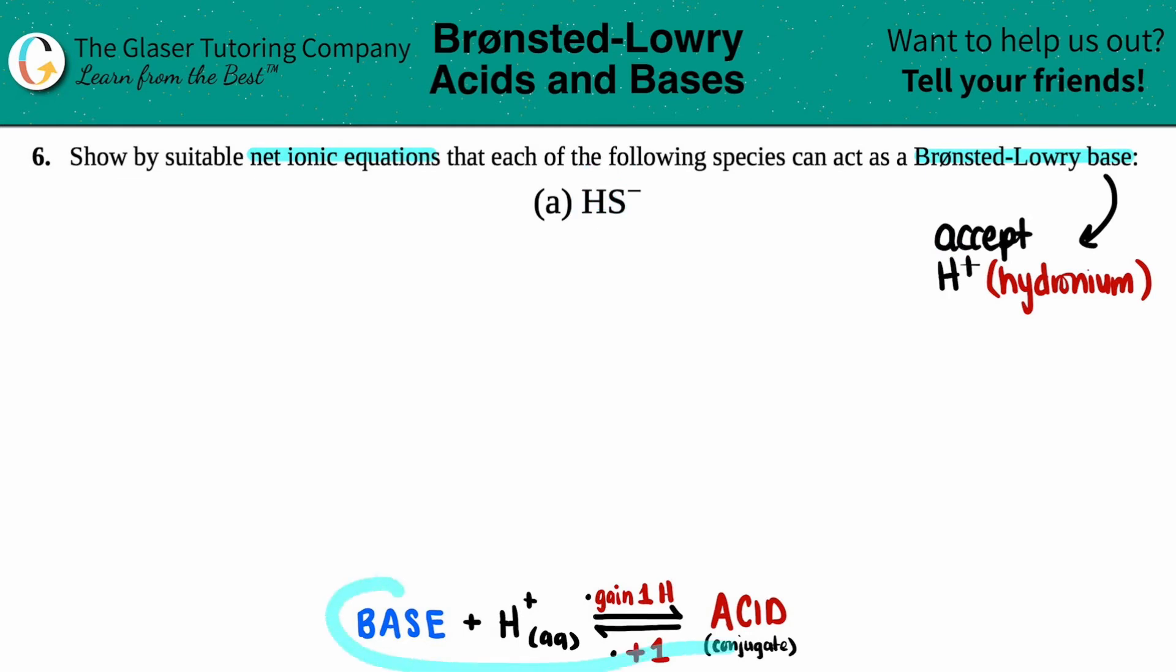So now how do we write that our base is going to be accepting an H plus? Well, I kind of wrote down a guide down here. Your base is going to be adding or accepting an H plus. The base and the H plus have to be on the same side. So let's start there. We have HS minus plus H plus.